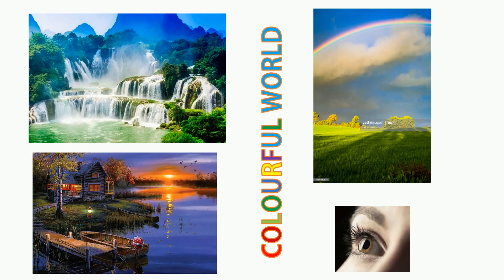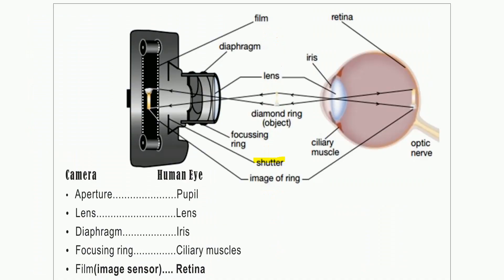Today we are going to see how this eye functions — the working of the eyes. Whenever we study about the eyes, the comparative study is very easy. We can easily understand it. That is why the eye is compared to the camera.